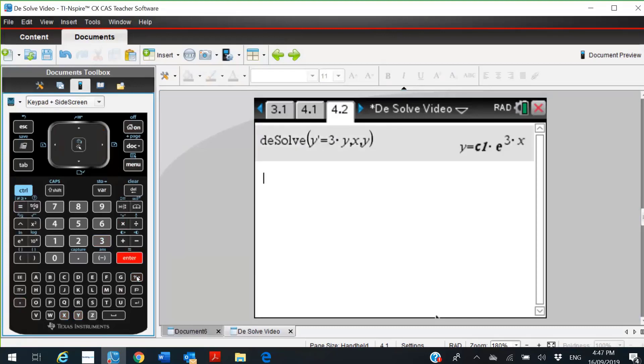So that'll give me y equals C1e to the 3x as a general solution. Notice that it involves an unknown parameter, C1 there.